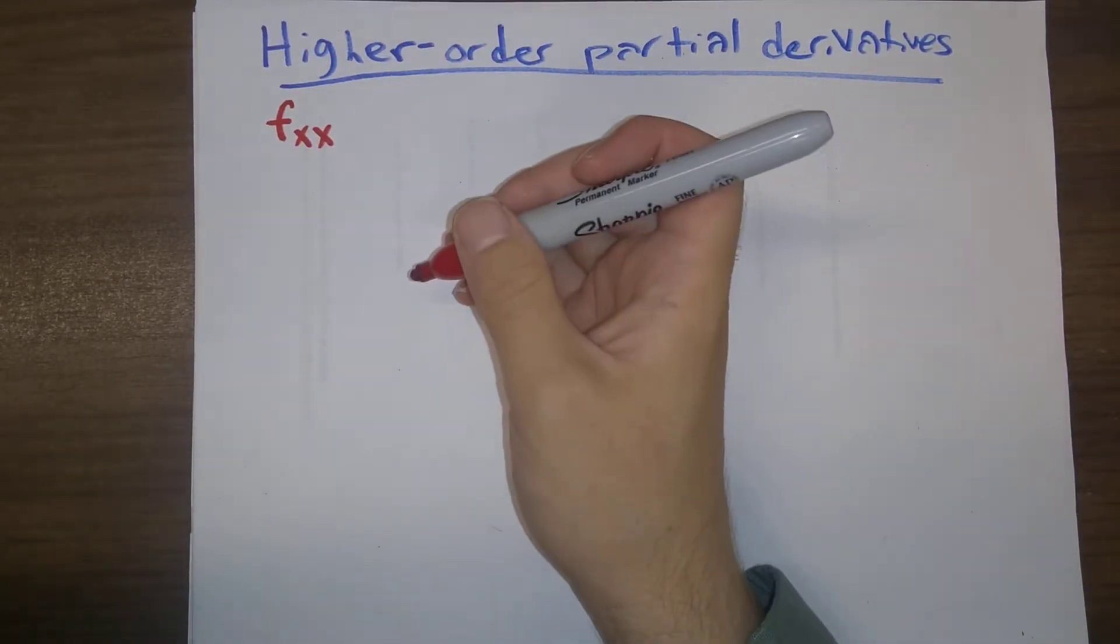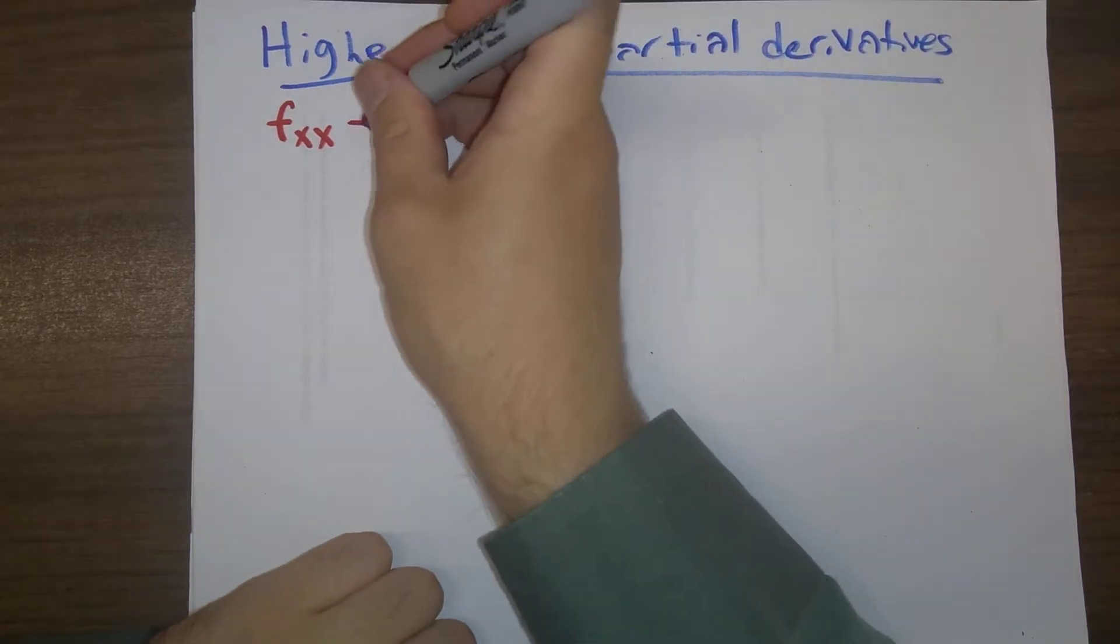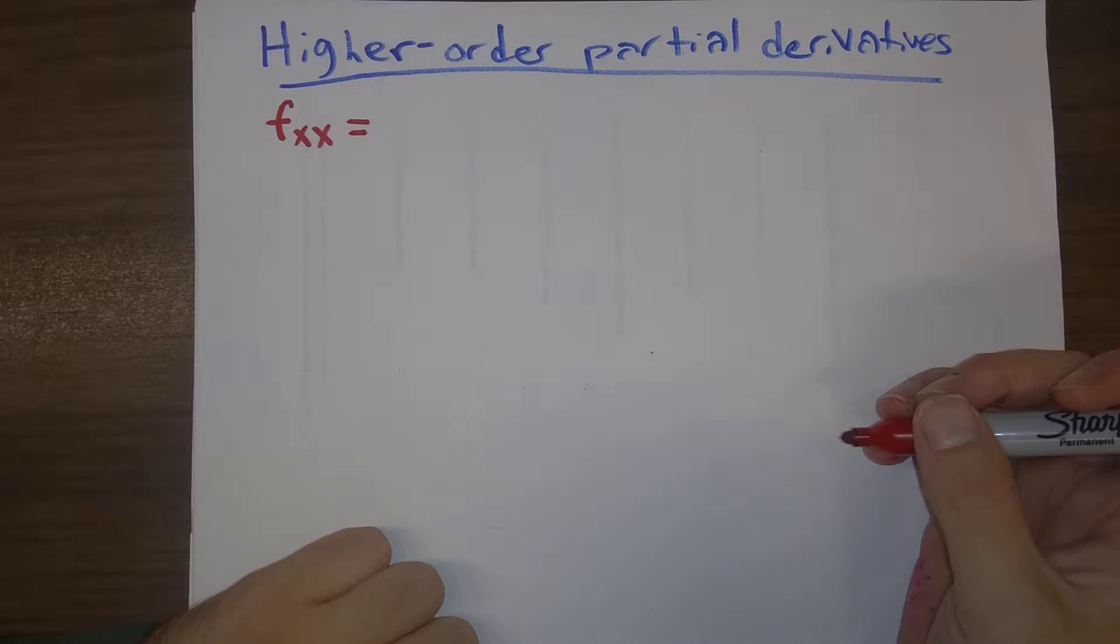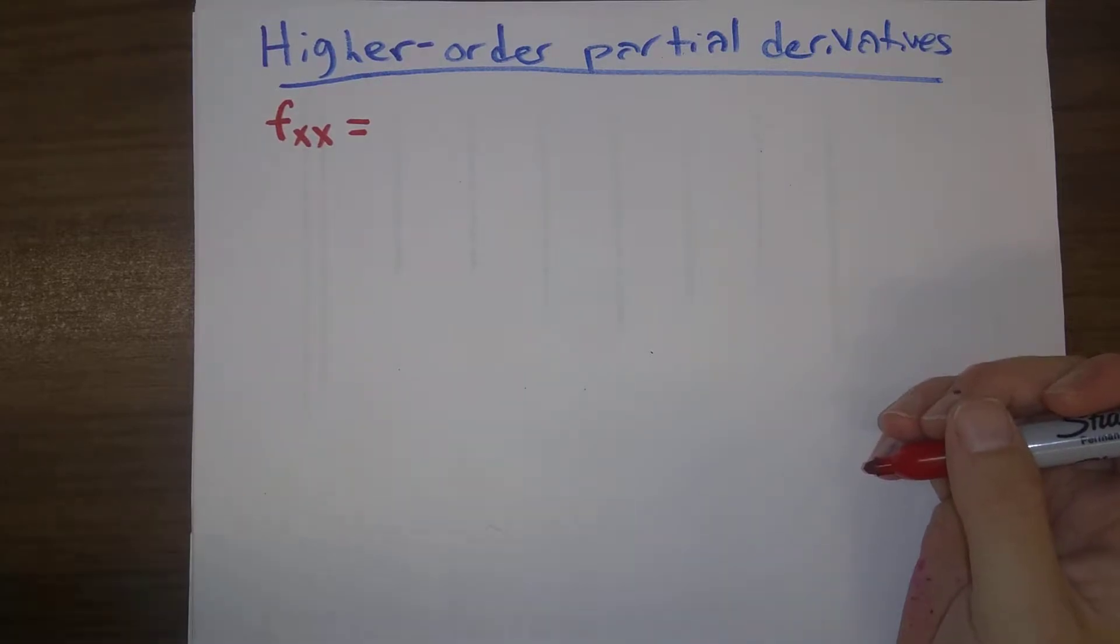But the thing is, we have to be careful about, well, now we have, assuming that we're starting off with a function of x and y, there's actually several different possibilities that we could have for second-order partial derivatives.